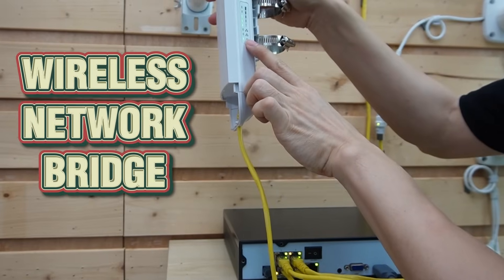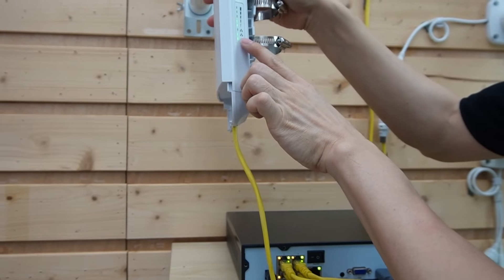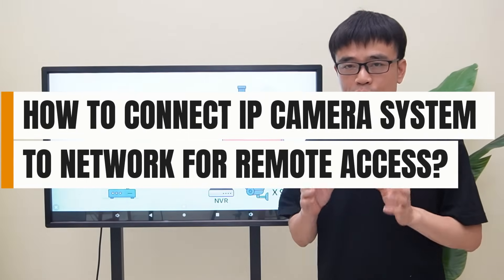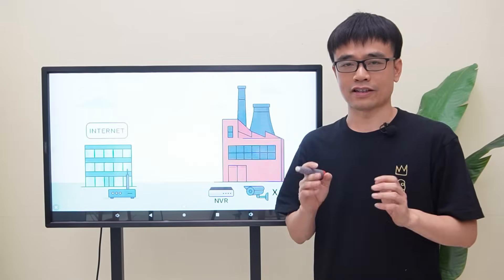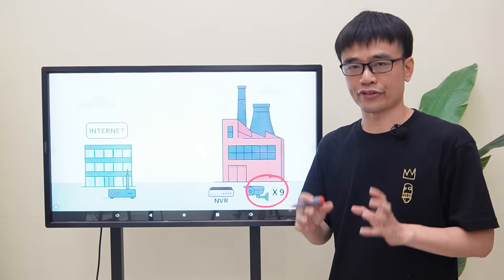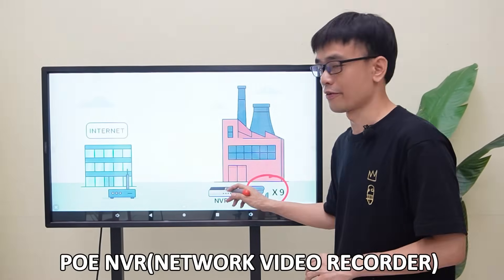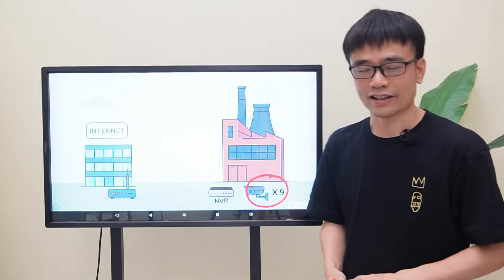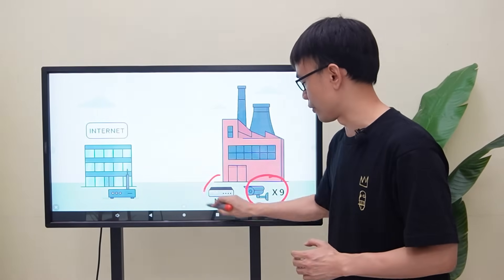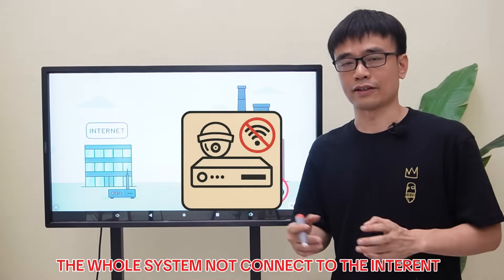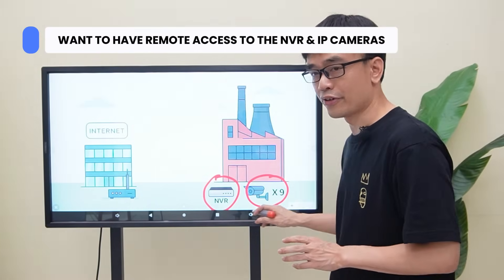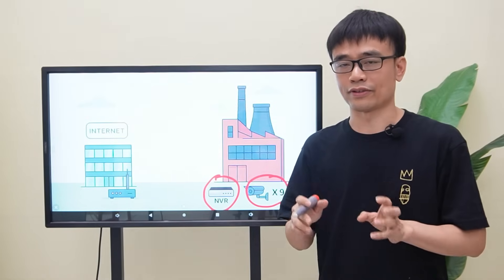How to connect an IP camera system to a network to have remote access. The customer has installed 9 IP cameras in his factory. All those cameras are connecting to a PoE network video recorder. It works well — he can watch the live videos from those cameras and playback the footage on this network video recorder. But now he wants to have remote access to these cameras and watch them when he is visiting customers.